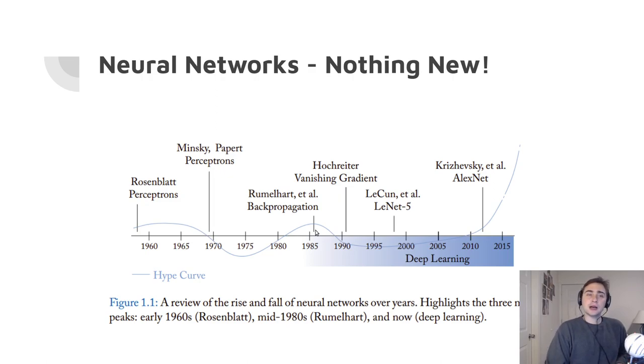But again, this kind of age suffered from another problem, which was promises that couldn't be delivered on and a lot of overhyping. And so again, we saw another one of these ice ages all the way from the later 1980s, early 1990s, going all the way until the late 2000s, early 2010s when we got AlexNet. So what happened around this time?